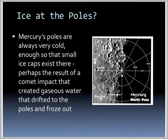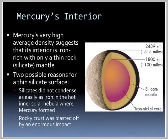Mercury's poles are always very cold — enough so that small ice caps exist there, perhaps the result of a comet impact that created gaseous water that drifted to the poles and froze out. Mercury has a very high average density, suggesting its interior is iron-rich with only a thin rock or silicate mantle.